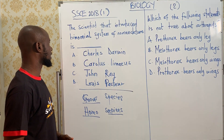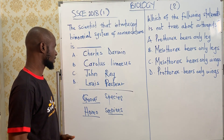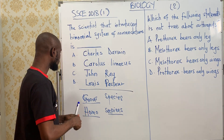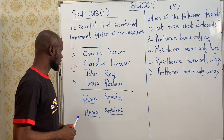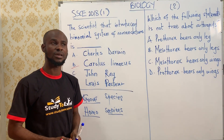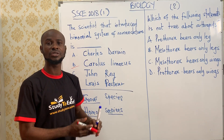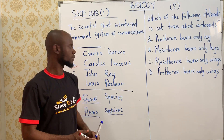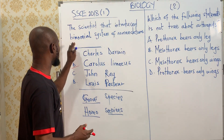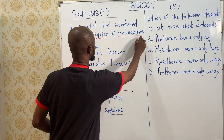The scientist that introduced the binomial system of nomenclature is — the answer is Carlos Linnaeus. Charles Darwin is the scientist that propounded the theory of evolution, after the scientist Jean Lamarck. Carlos Linnaeus is the scientist that propounded the binomial system of nomenclature.